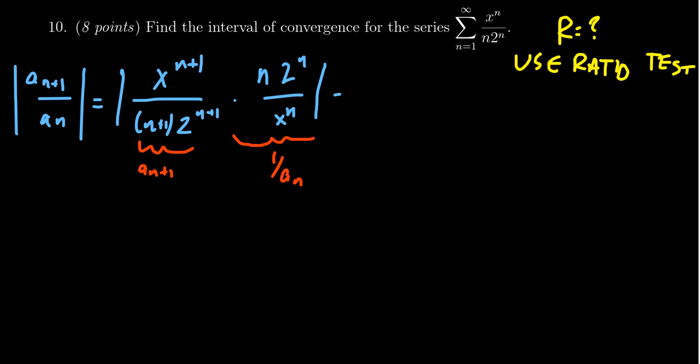My recommendation when working out this limit is to put together similar type things like exponentials, the x's, the n's. For example, there's this rational expression n over n plus 1. There's the exponential 2 to the n over 2 to the n plus 1, and finally x to the n plus 1 over x to the n.